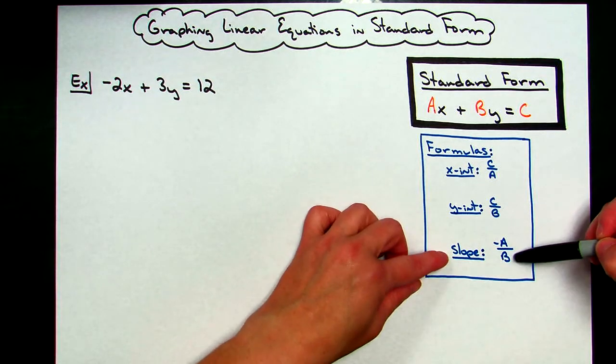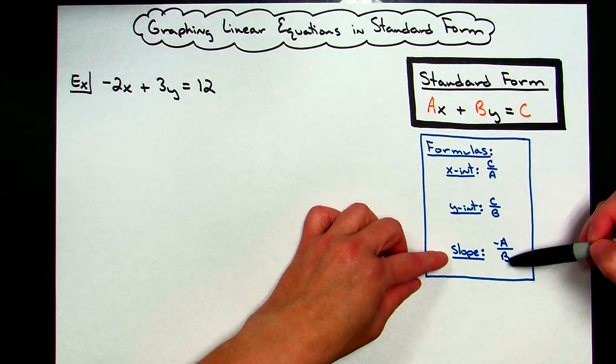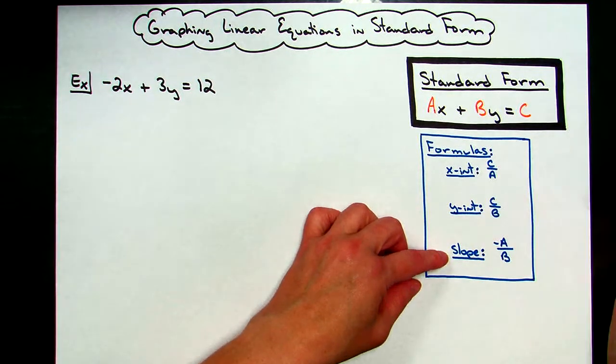You may also find the slope for an equation in standard form by using negative A over B. So, negative A over B, and then just simplifying.